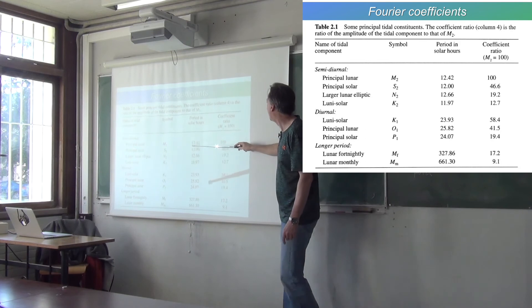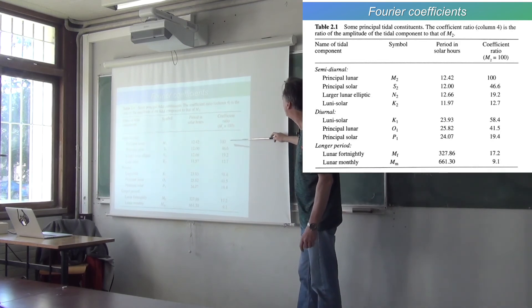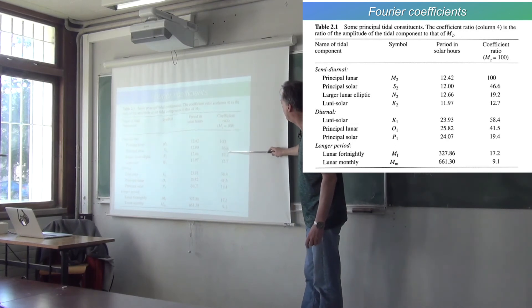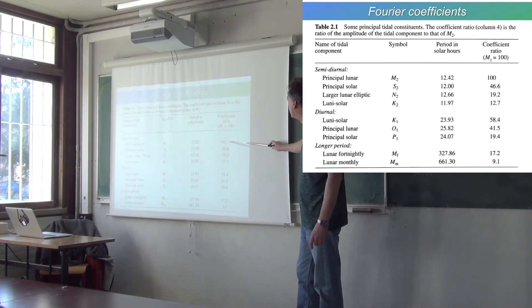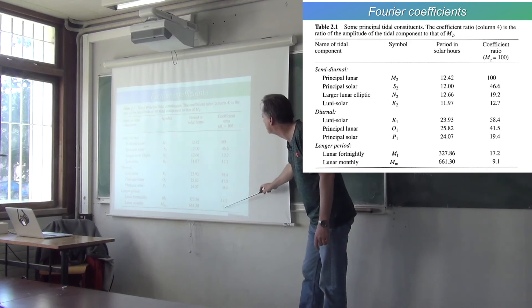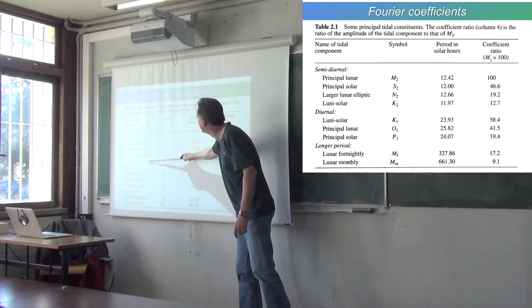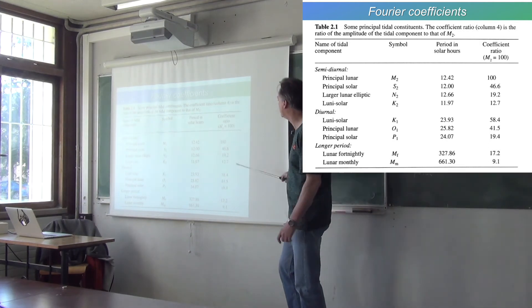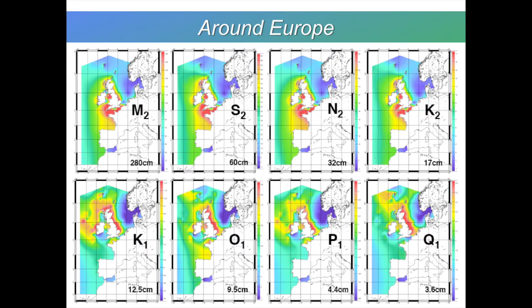The amplitude, well, we call it 100 for the moon. That's just by definition. And then the sun, it's 46.6, so it's about half as strong as the lunar tide. And then we have all these other components which have different amplitudes, different periods, semidiurnal, diurnal, and longer periods. And they all have letters and names and tidal models take into account all these components.